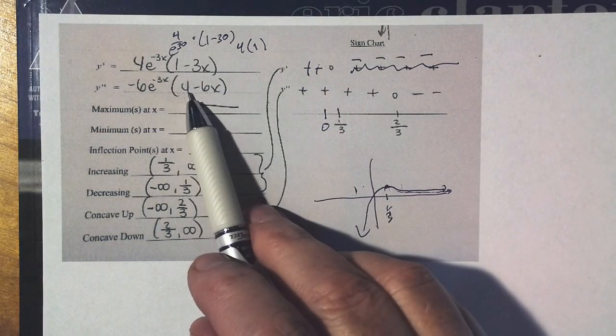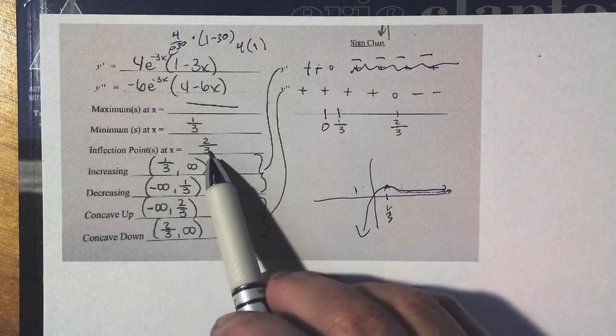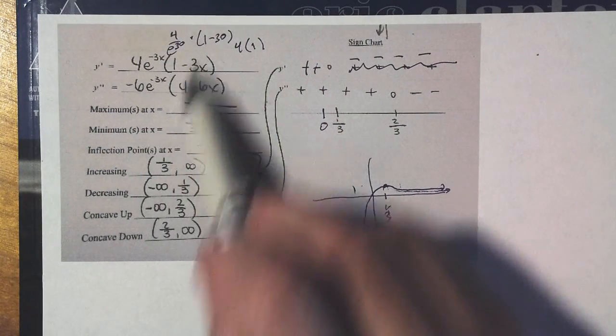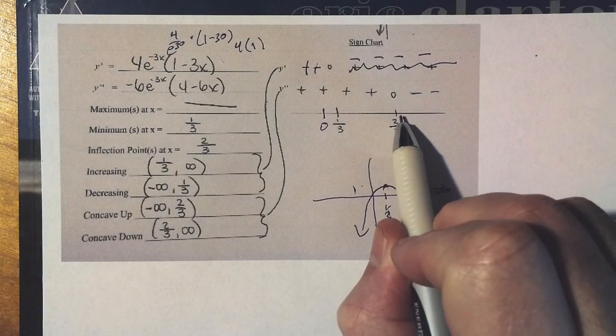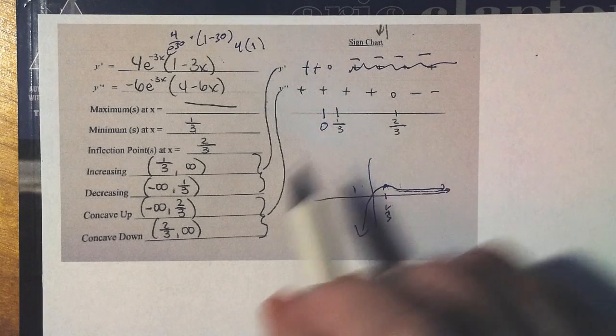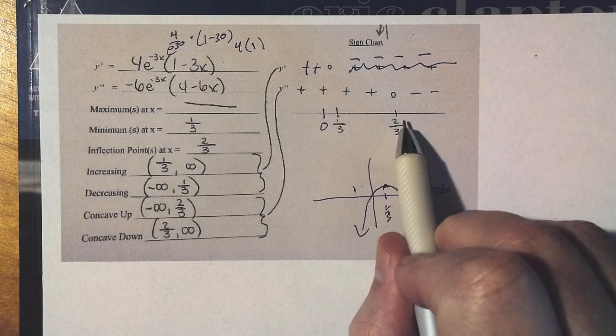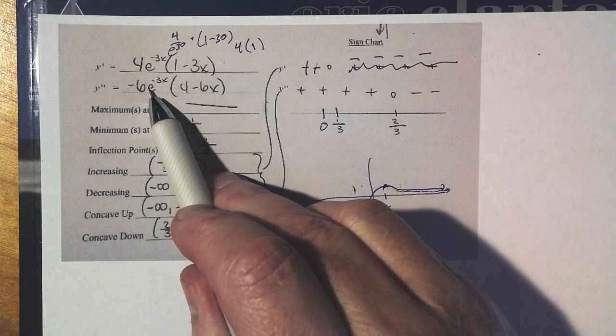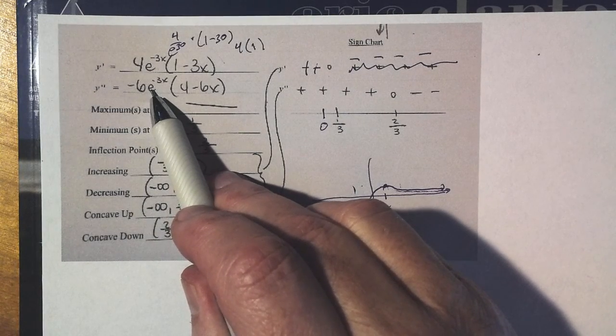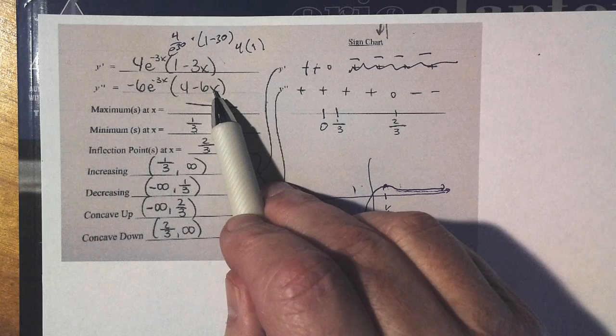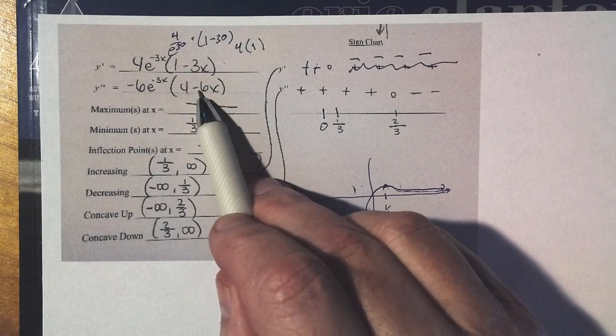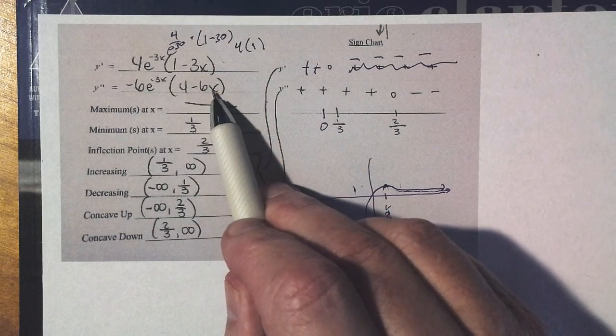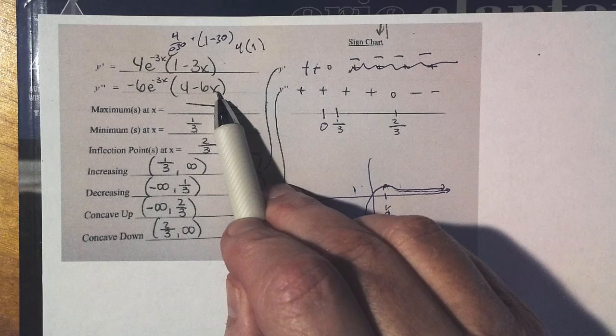Now your second derivative is zero at two-thirds. Perfect. I mean, wonderful job here. Second derivative is zero at two-thirds. If I put something bigger than two-thirds in, let's say 10, I get negative 6 times, or negative 6 on e to the 30th, a negative. If I put a negative here, I get 4 minus 6 times 10, another negative.